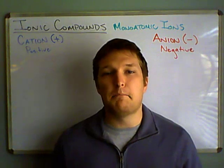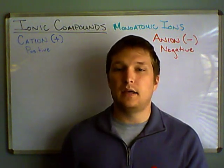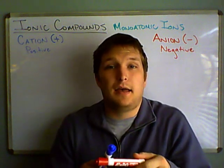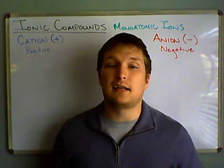So, monatomic means one atom, and ion means that normal atom has either lost or gained electrons.